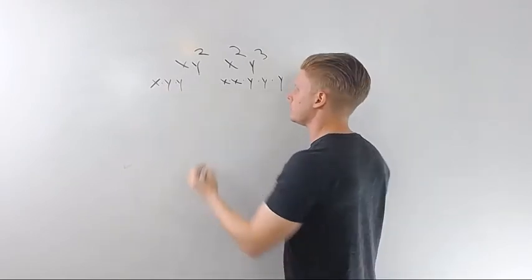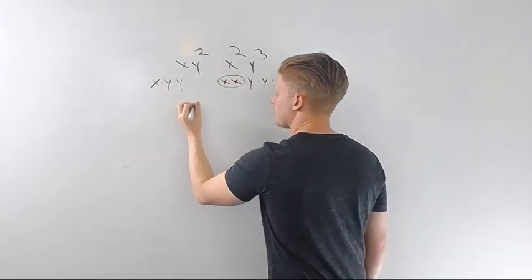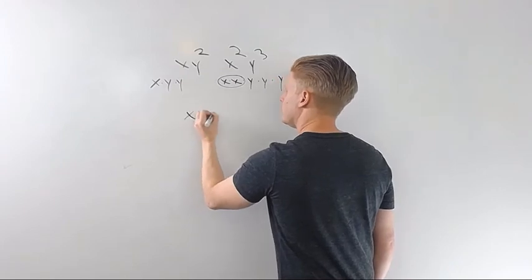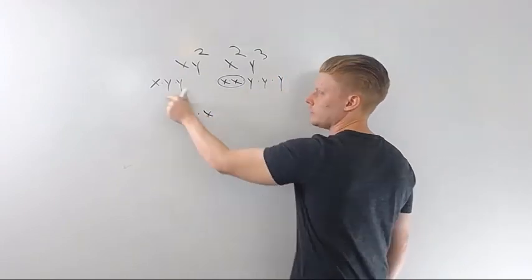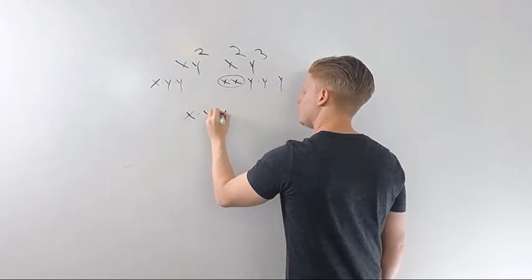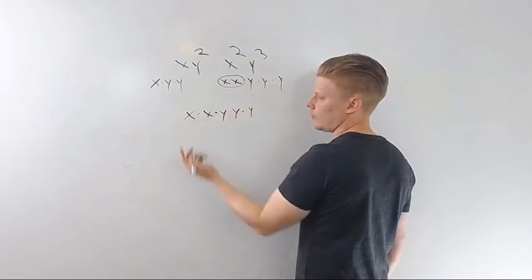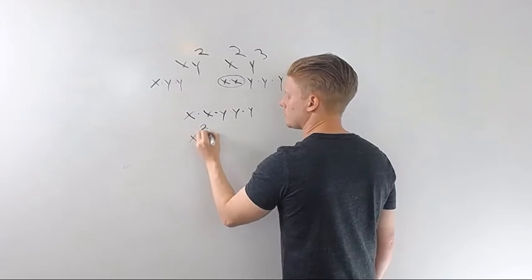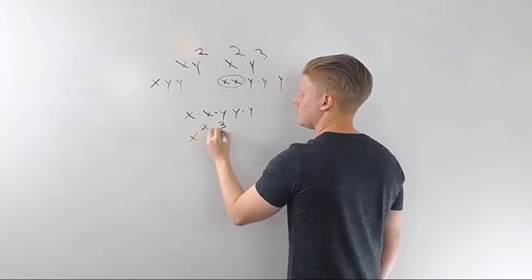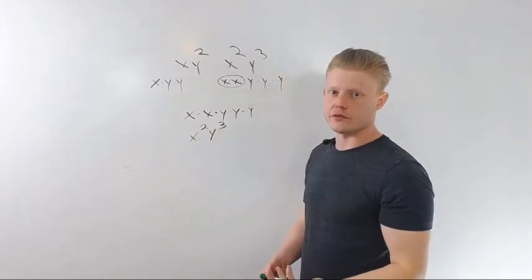Remember, I take the most occurrences. I've got two x's here. I'll take both of those. I've got three y's here. So, take all three of those y's. And, of course, I can put it back into exponential notation. And, that's going to be my greatest common factor.